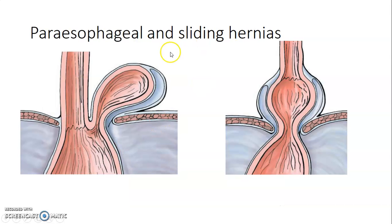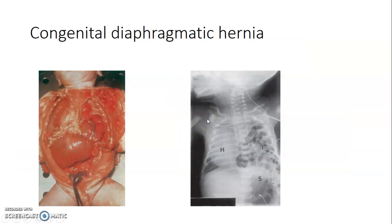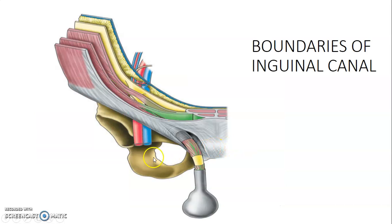These are types of oesophageal hernias at the diaphragm. A para-oesophageal hernia is where the fundus of the stomach herniates parallel to the oesophagus. A sliding hernia is where the stomach slides upwards through the oesophageal aperture on the diaphragm. Congenital diaphragmatic hernia is where abdominal viscera get into the thorax because of a defect on the diaphragm — you can see on the X-ray that bowels have gone into the thorax.